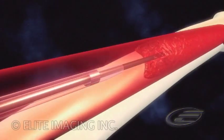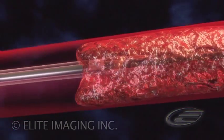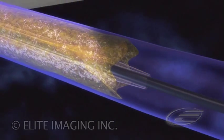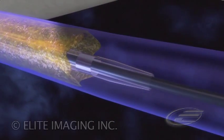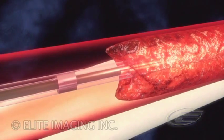The lysis drug delivery catheter is advanced over the guide wire until the tip of the catheter passes through the clot. The guide wire is removed.